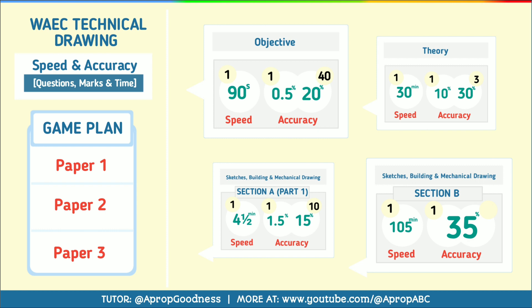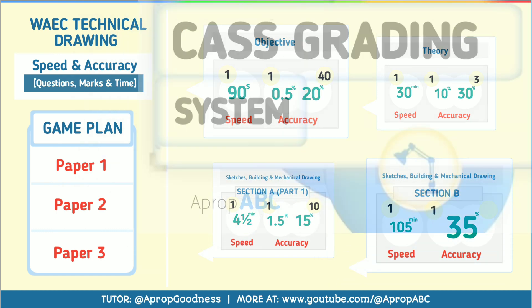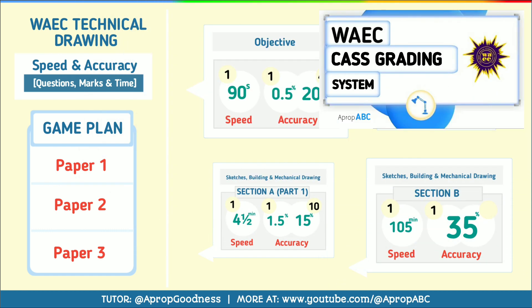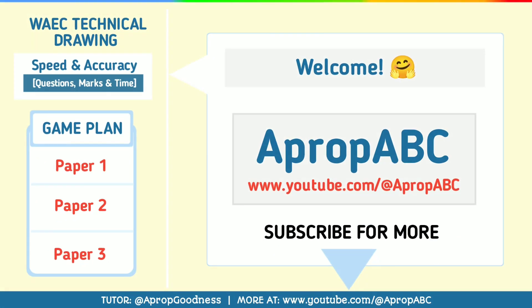Note: anytime I talk about percentage in this video, for school candidates it means tasks, so you have to multiply that percentage by 70%. But if you're a private candidate, you don't need to multiply. If you need to understand this better, you can click the card on the screen or check the description section. If you need videos like this, don't forget to click the red subscribe button and the notification bell.